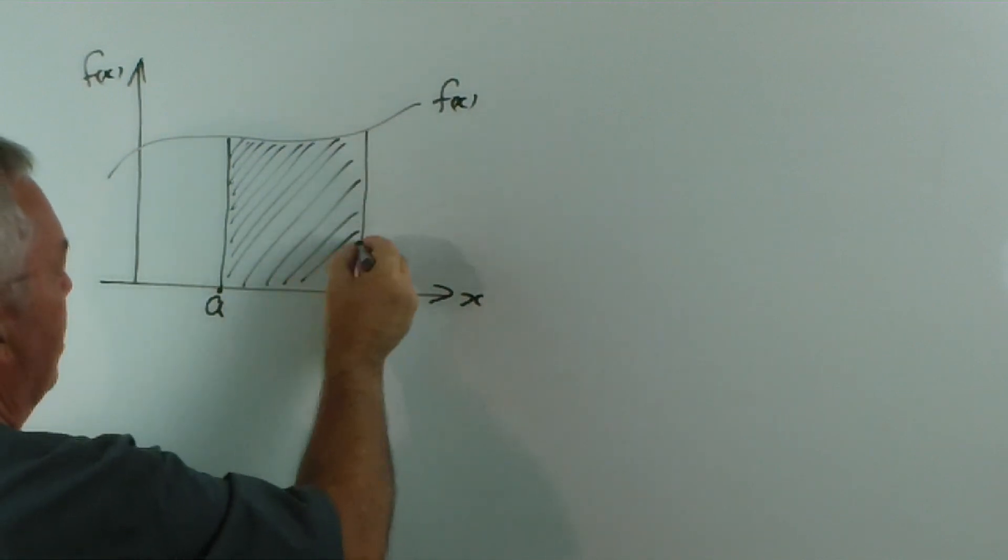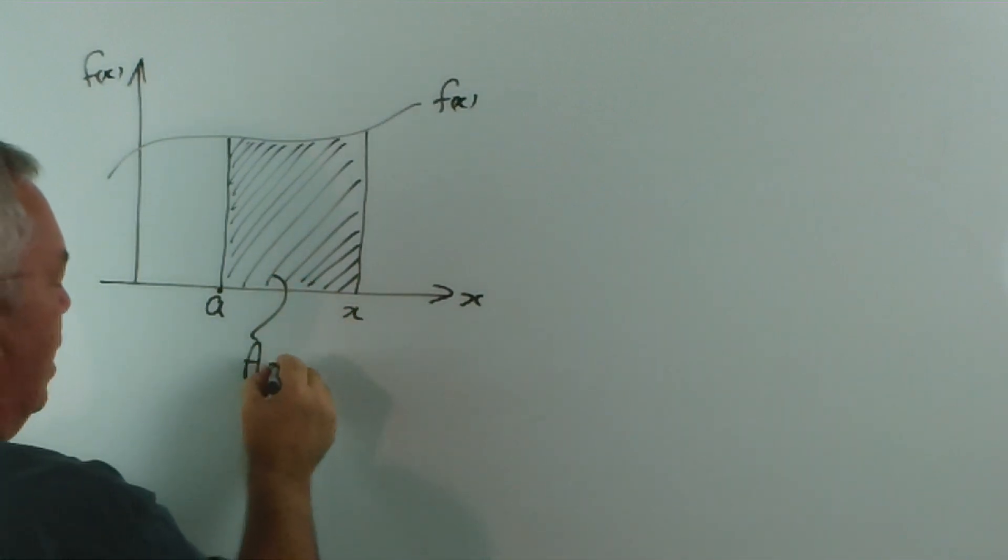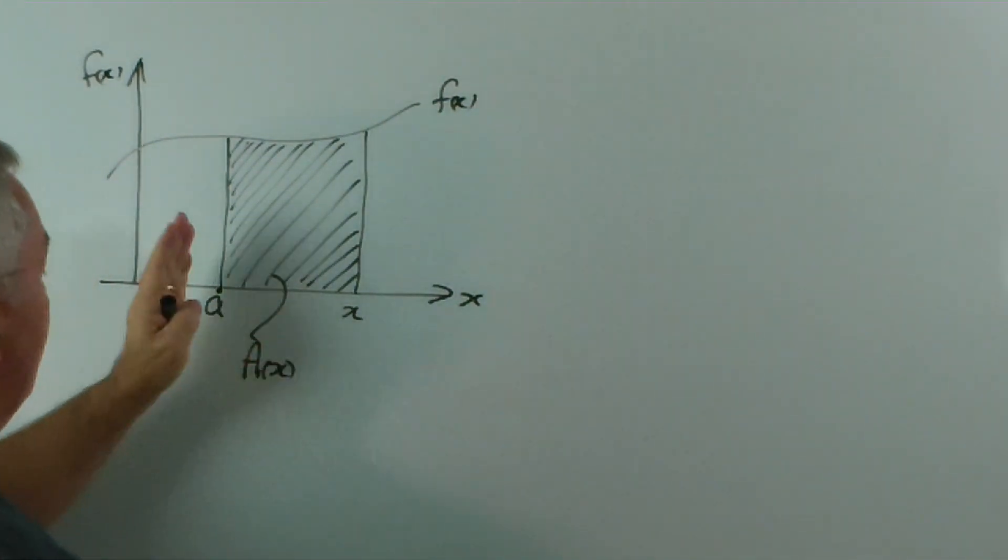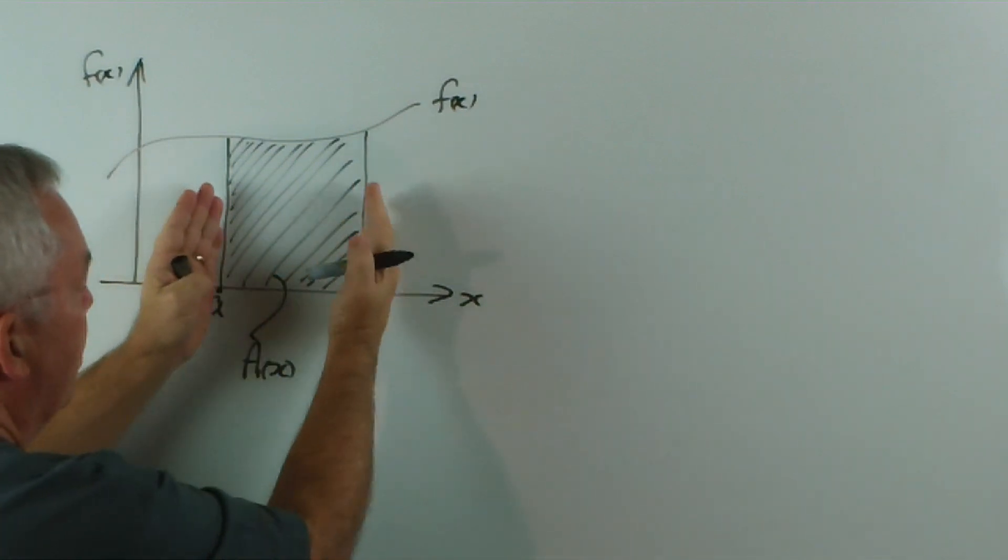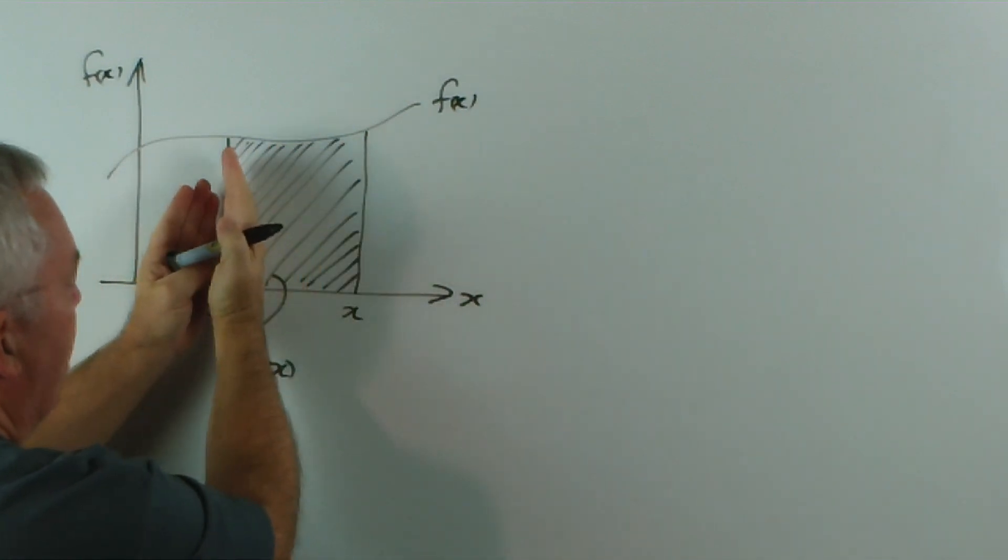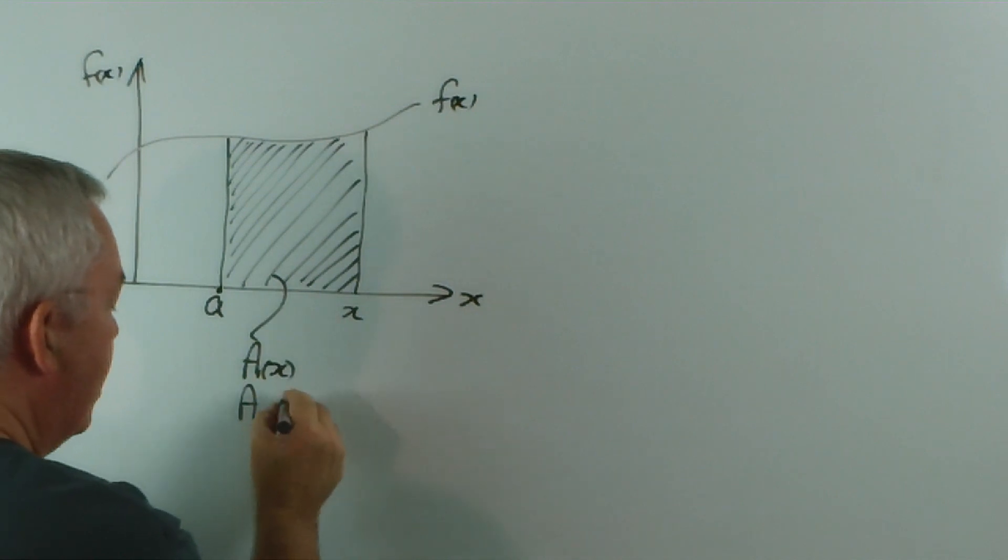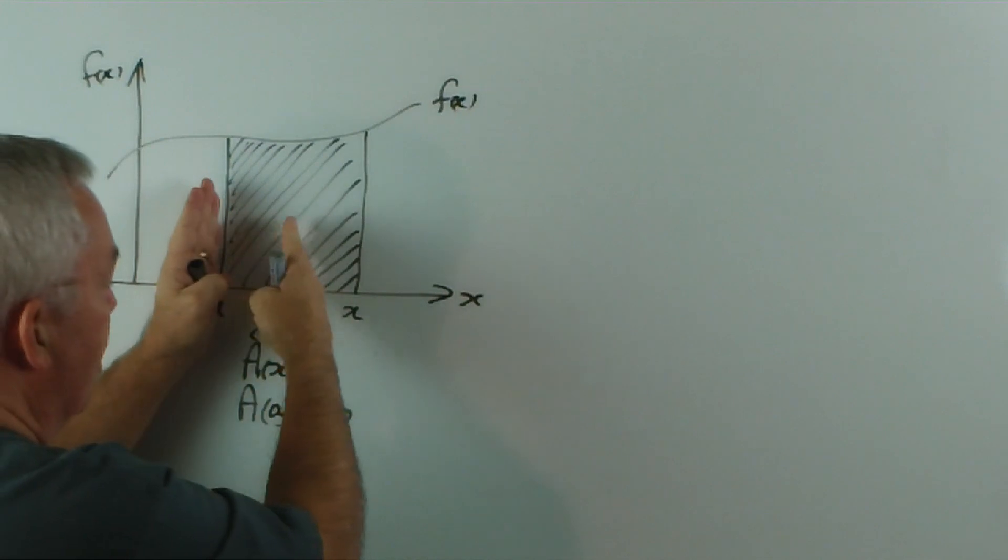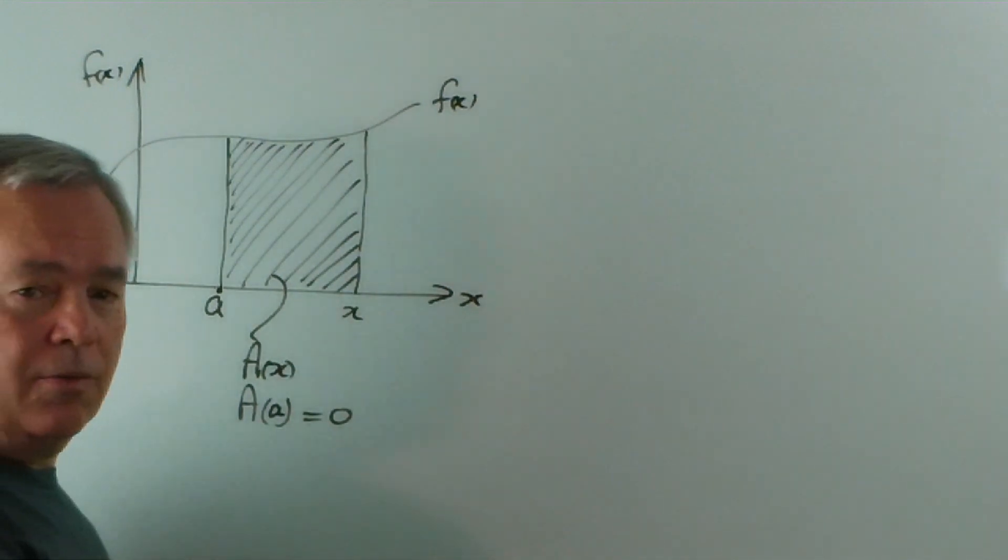And we're going to give this a function name, capital A, for area. Area is a function of x. You can see that if x was equal to A, if this upper boundary came right back to where A was, that the area between the two would be zero. So we could write that the area at A is zero. But as x grows, the area grows as well. And the area is a function of x.